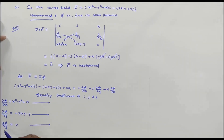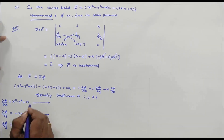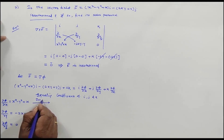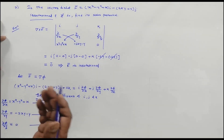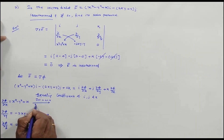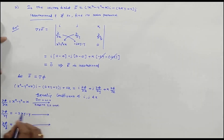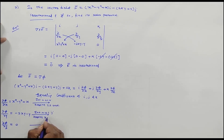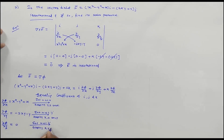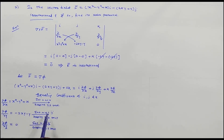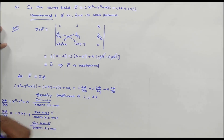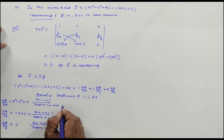To find φ, we integrate each equation with respect to its variable. Integrating the first equation with respect to x (keeping y and z constant) gives φ = x³/3 - y²x + x²/2 + ψ₁(y,z). Integrating the second with respect to y (keeping x and z constant) gives φ = -xy² + y²/2 + ψ₂(x,z). Integrating the third with respect to z gives φ = 0 + ψ₃(x,y).